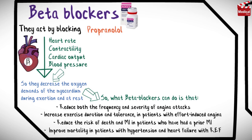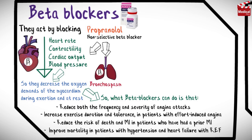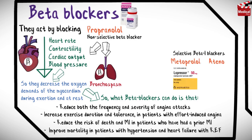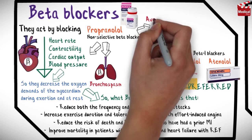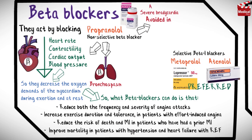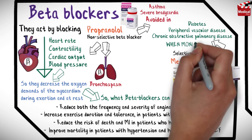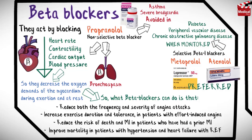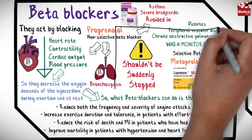Propranolol is the prototype beta blocker but is not cardioselective. Non-selective beta blockers block beta-1 receptors in the heart, decreasing heart rate, but also block beta-2 receptors in the lungs, causing bronchospasm. Selective beta-1 blockers such as metoprolol and atenolol are preferred. Non-selective beta blockers should be avoided in patients with severe bradycardia or asthma. Beta blocker therapy should not be suddenly stopped; the dose should be gradually tapered over two to three weeks to avoid rebound angina, myocardial infarction, and hypertension.